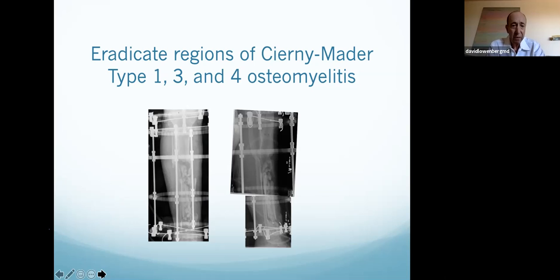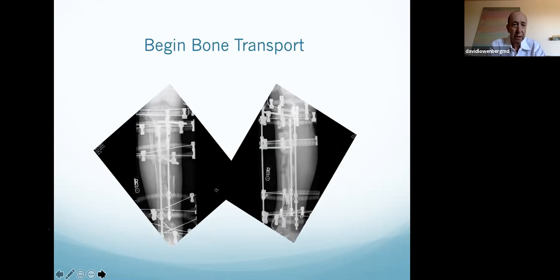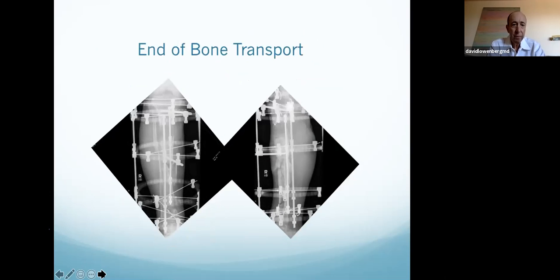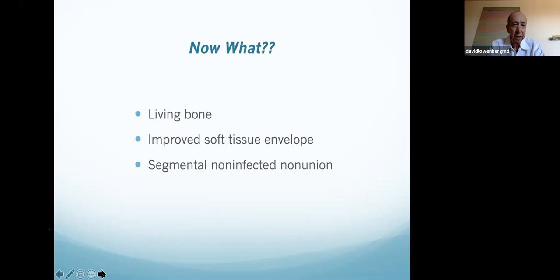A thorough debridement was done — beads were placed, and anything left behind was because it was bleeding and alive. There was more bone that was alive than I thought there would be. After debridement, we went to the next stage: bone transport to get rid of the non-union and defect. After the proximal beads were removed, there he is after the frames removed — no draining wounds, infection eradicated. These pieces that I thought would be dead were bleeding. I can't always tell — the only way I can tell for sure is to open it up and take a look.